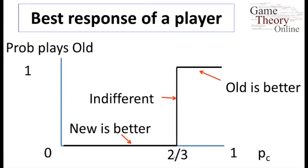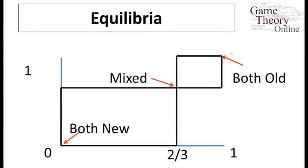Translating into the best response: below two-thirds new is better, exactly at two-thirds the row player can play any probability on old, and above two-thirds old is better. Since the game is symmetric, we just flip the best response correspondence across the axes to get the other player's best response. Putting them together, we look for intersection points on the best response correspondences. We find one up here, one in the middle, and one down here — three equilibria.